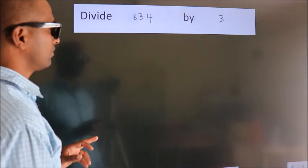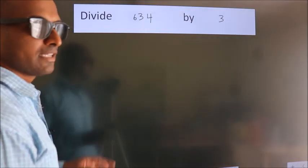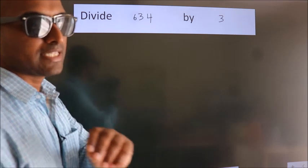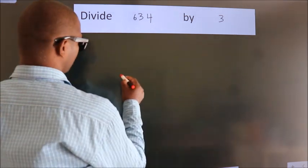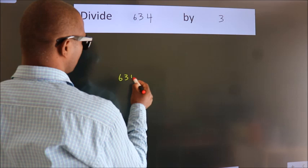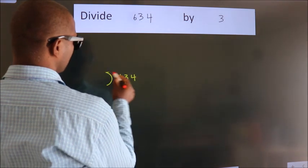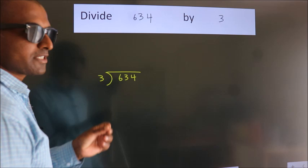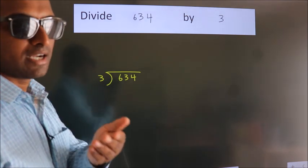Divide 634 by 3. To do this division, we should frame it in this way: 634 here, 3 here. This is your step 1.